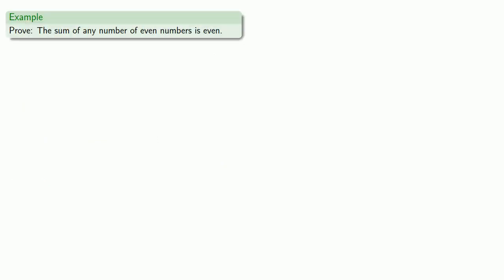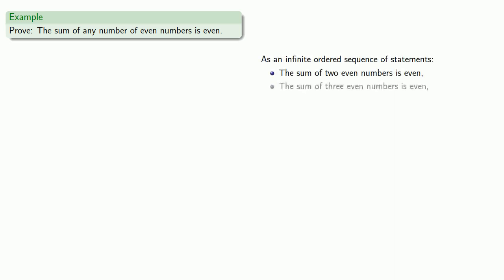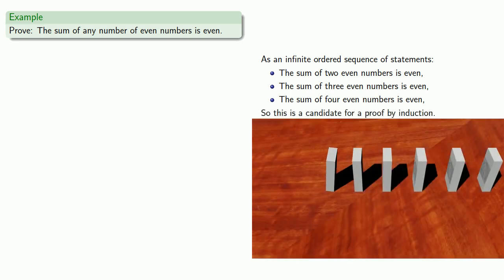For example, suppose we want to prove that the sum of any number of even numbers is even. As an infinite ordered sequence of statements: the sum of two even numbers is even, the sum of three even numbers is even, the sum of four even numbers is even, and so on. So this is a candidate for a proof by induction.